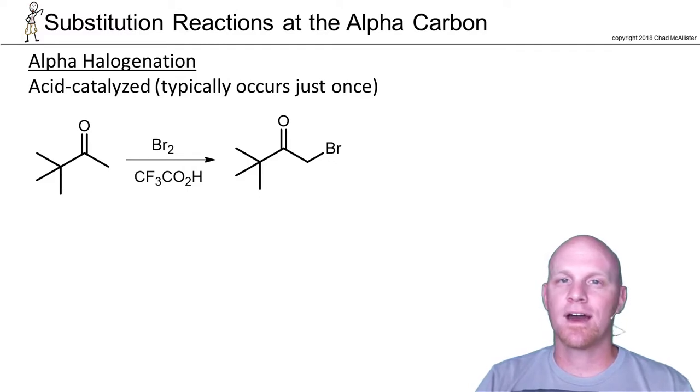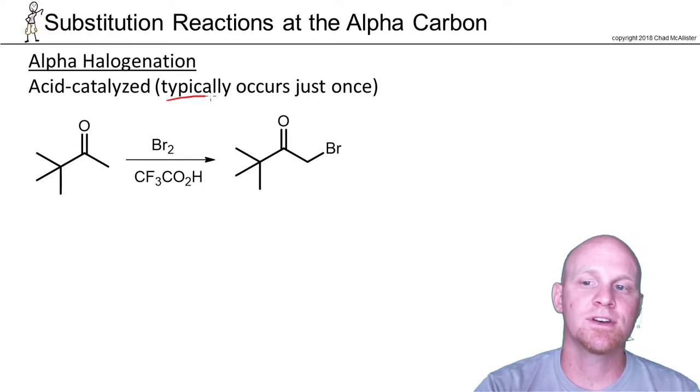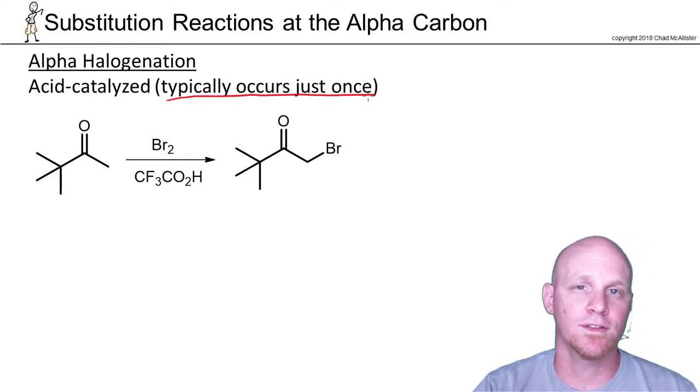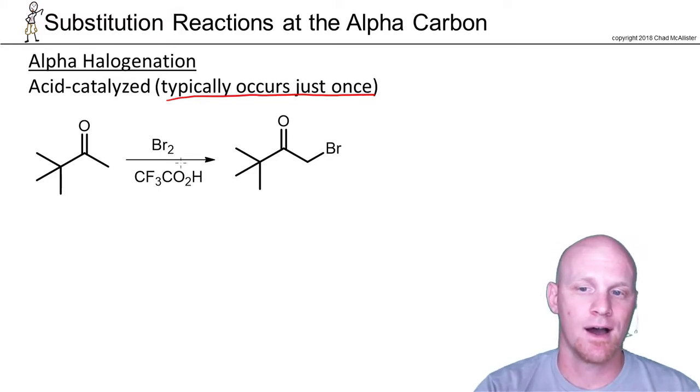And this occurs both in an acid-catalyzed mechanism as well as a base-catalyzed mechanism. And we'll find out that when we do it acid-catalyzed, it generally is only going to occur once. It generally can replace one of the alpha hydrogens with a halogen. In this case, I'm going to do bromination.